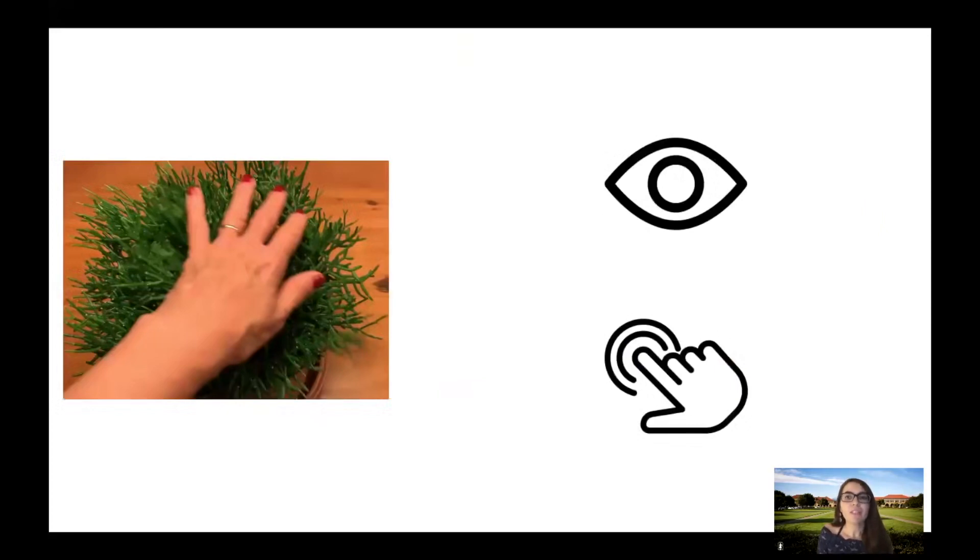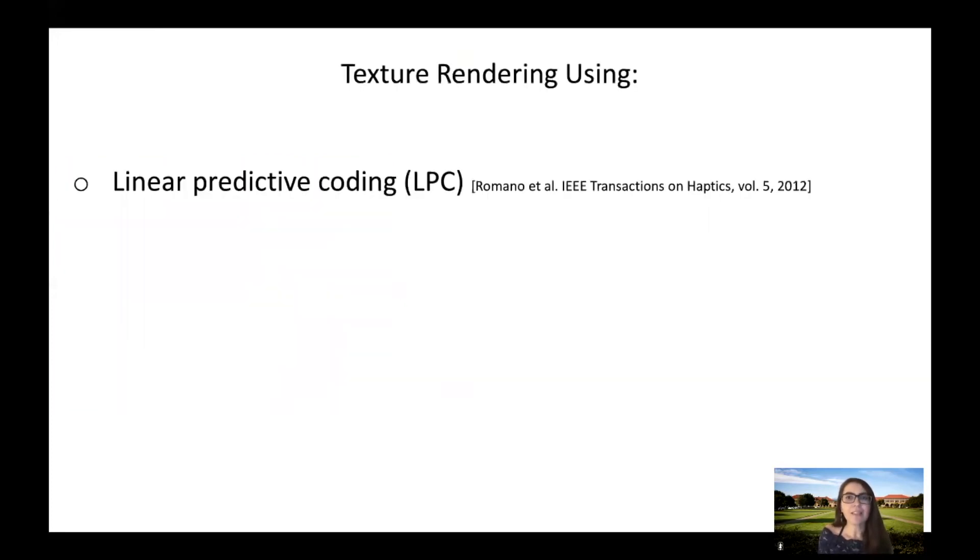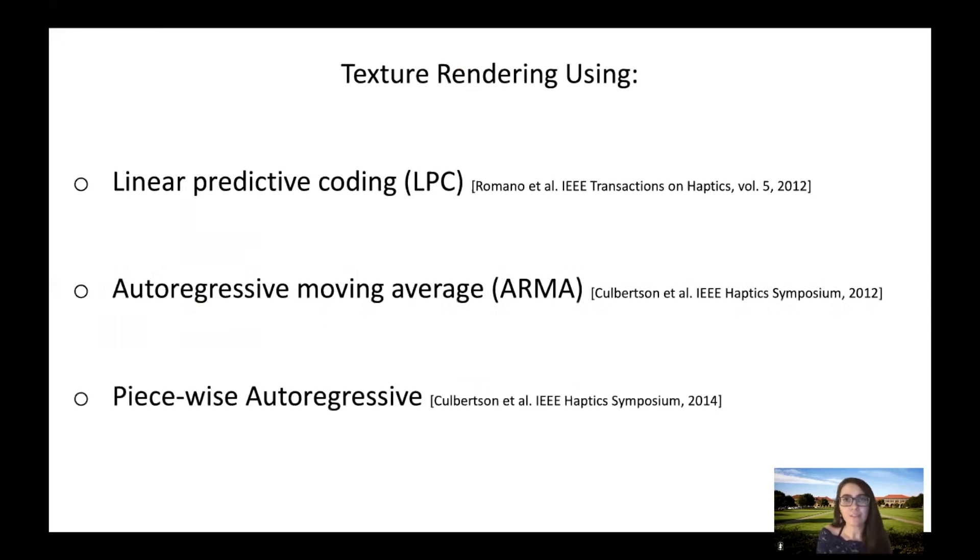Let's go back to the motivation and talk about our work in more detail. As previously mentioned, realistic environments can benefit from rich multimodal sensory feedback, including the haptic texture. To this end, several researchers have worked on texture rendering using linear predictive coding, autoregressive moving average, and piecewise autoregressive models.